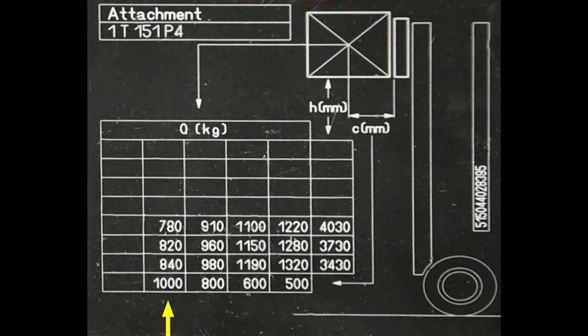So at a 1000 millimeter, or one meter load center, we now have the capacity to lift 840 kilos to 3.43 meters, all the way down to a mere 780 kilos at 4.03 meters.